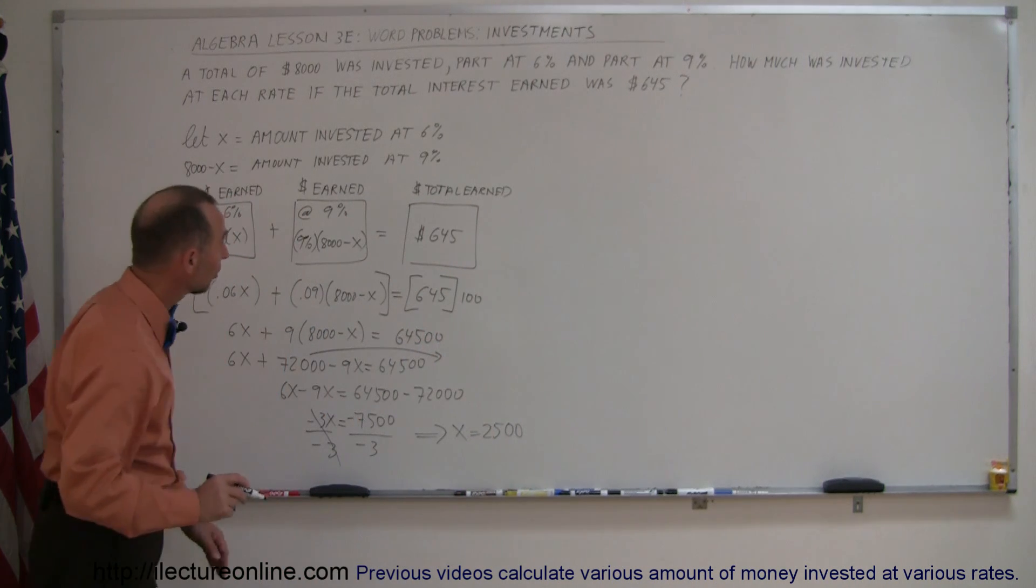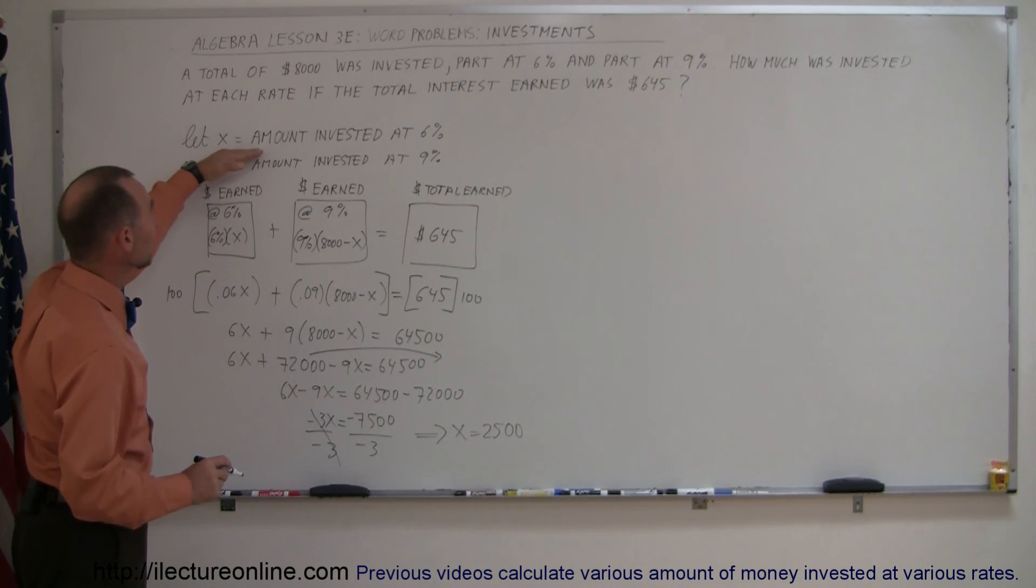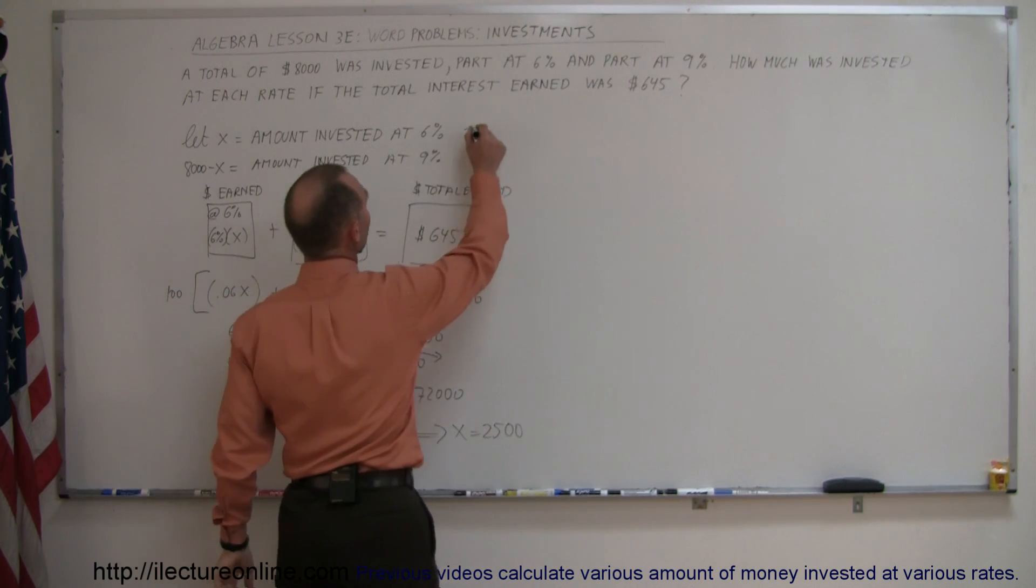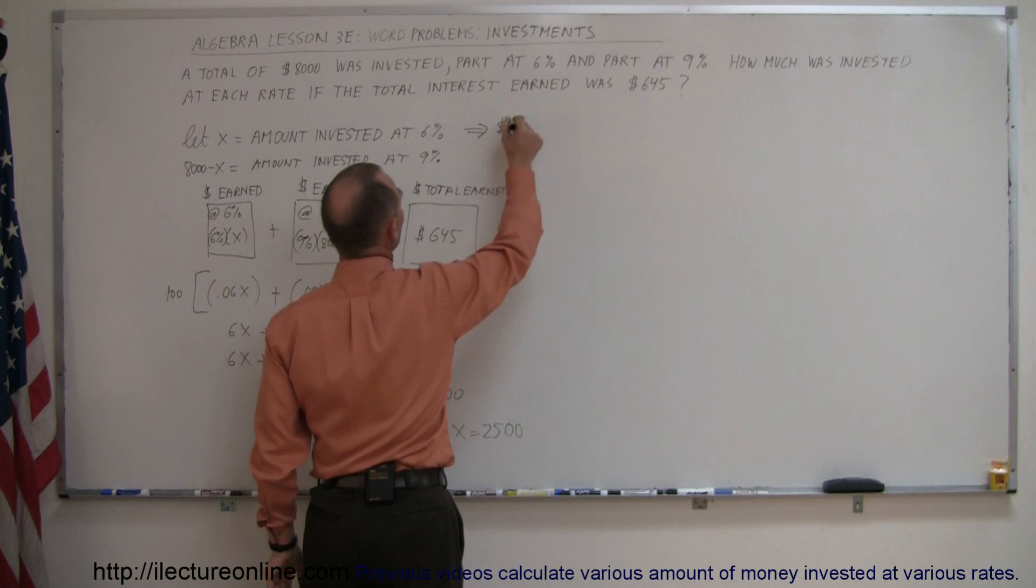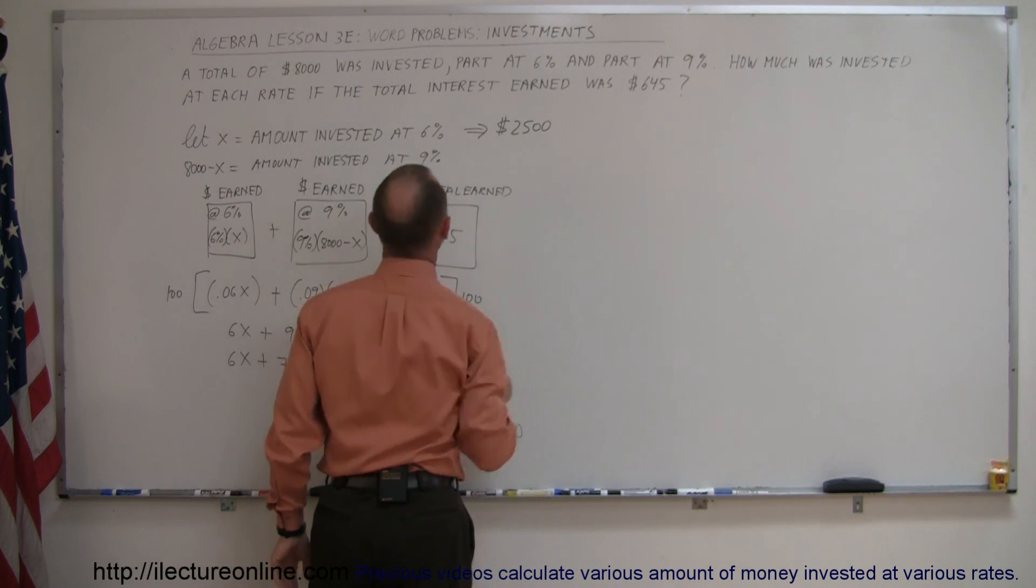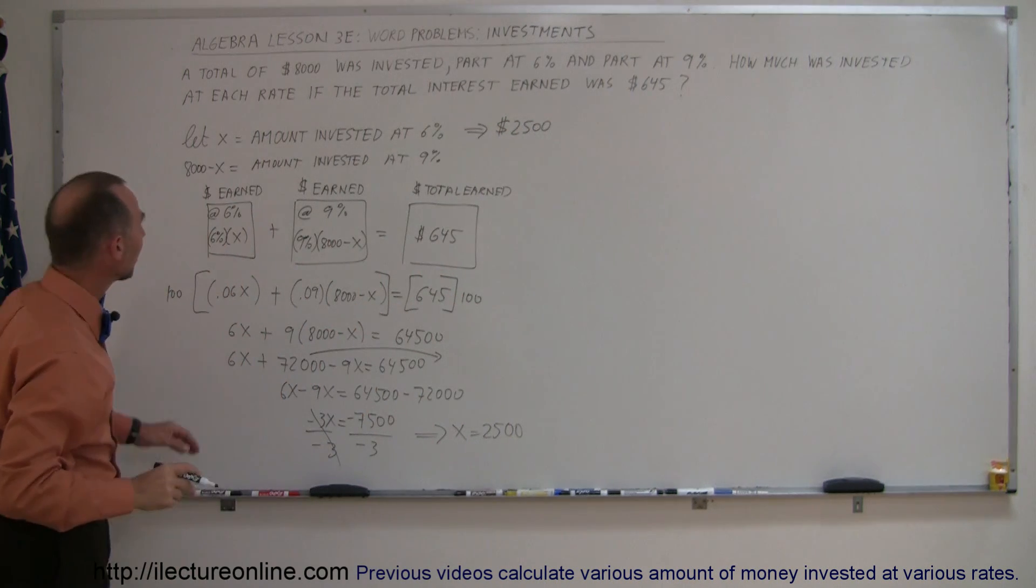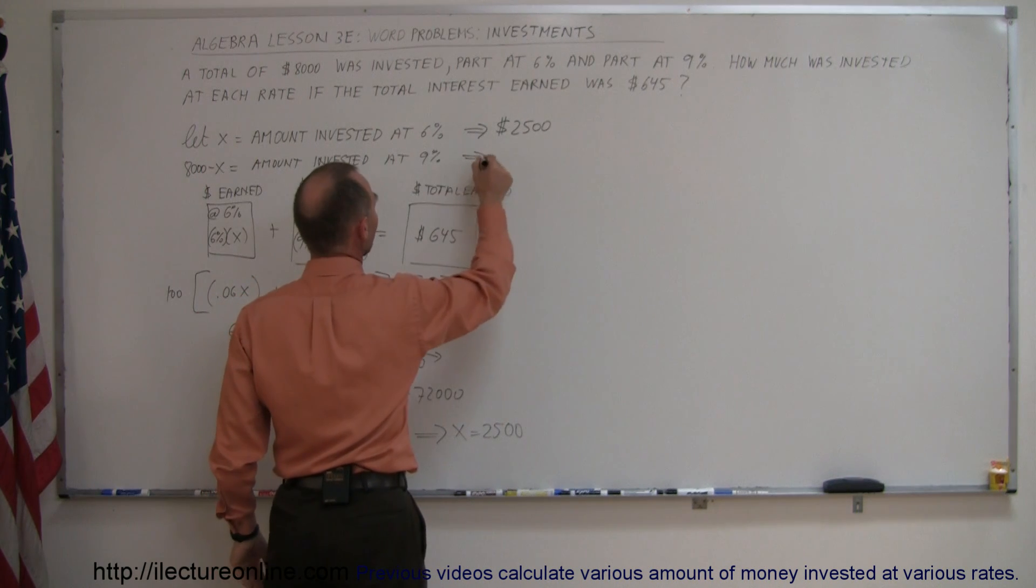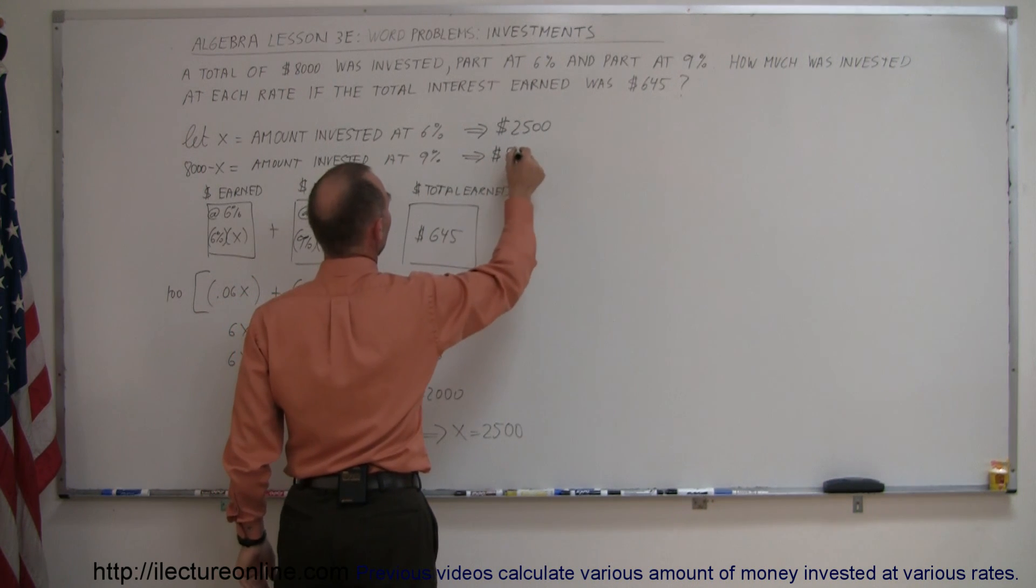Going back to our definitions, we see that X represented the amount invested at 6%. Since X is 2,500, that means we invested $2,500 at 6%. And then the remainder, 8,000 minus that, which is 5,500, is the amount invested at 9%.